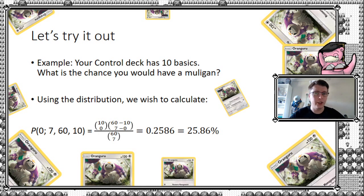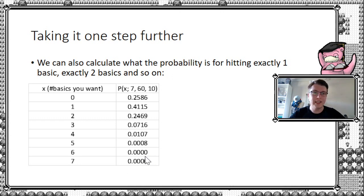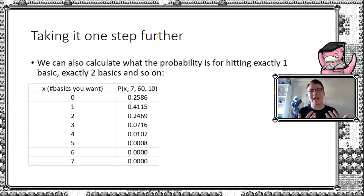Of course we can take this further by replacing x = 0 with 1, 2, 3, 4, up to 7, to calculate the chances of starting with exactly x number of basics. Here is a table of probabilities to four decimal places. You can see it quickly goes to very low values. The highest probability is actually starting with exactly one basic: 41.15%. Starting with a full hand of basics is extremely unlikely, so while it can happen, it's not something you should expect.